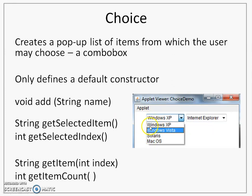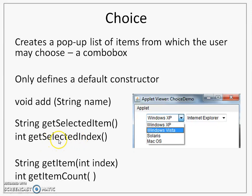The first item has index number 0, then 1, 2, and 3. Once I make a selection from this list, I can call the getSelectedItem method, which will return a string value — the item that I have selected. Also, in a combo box or Choice, only one selection is allowed.